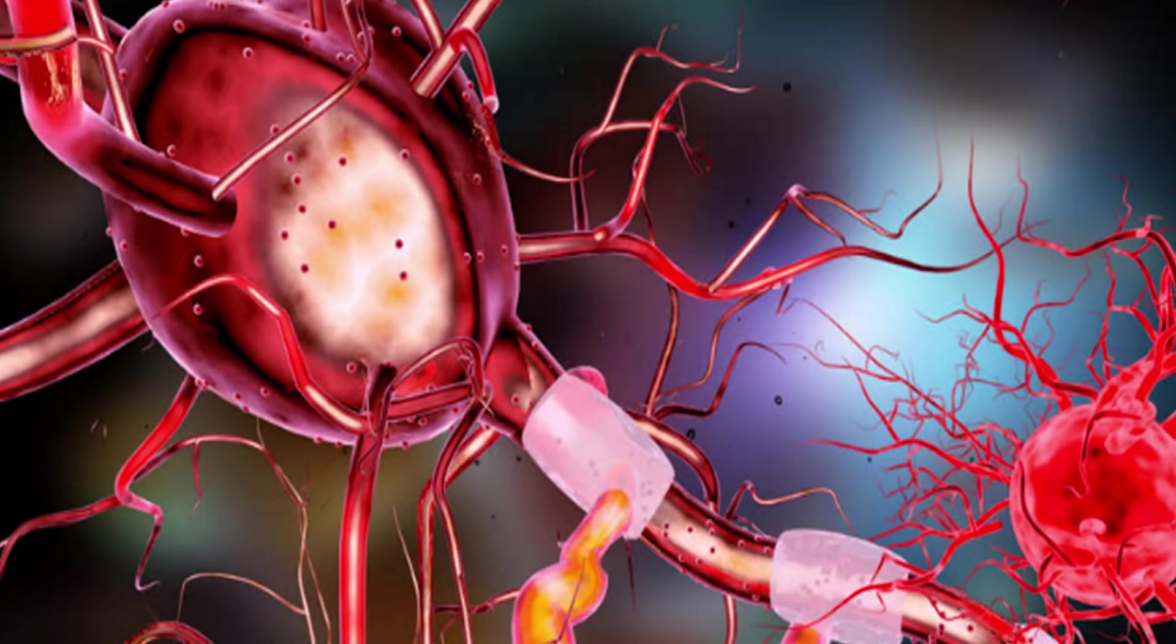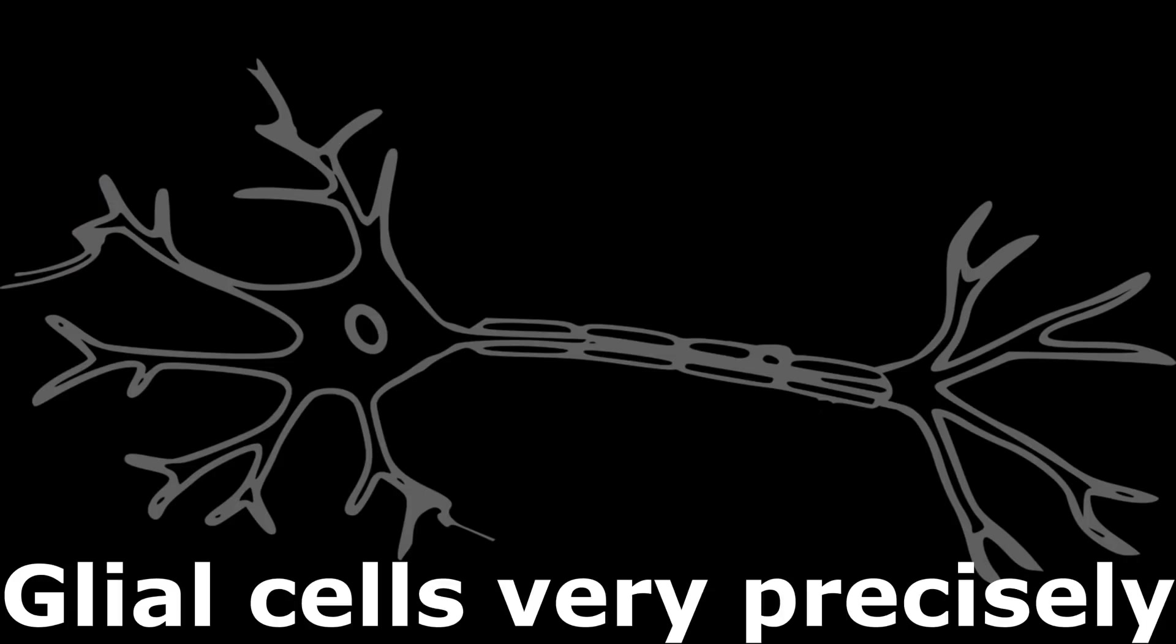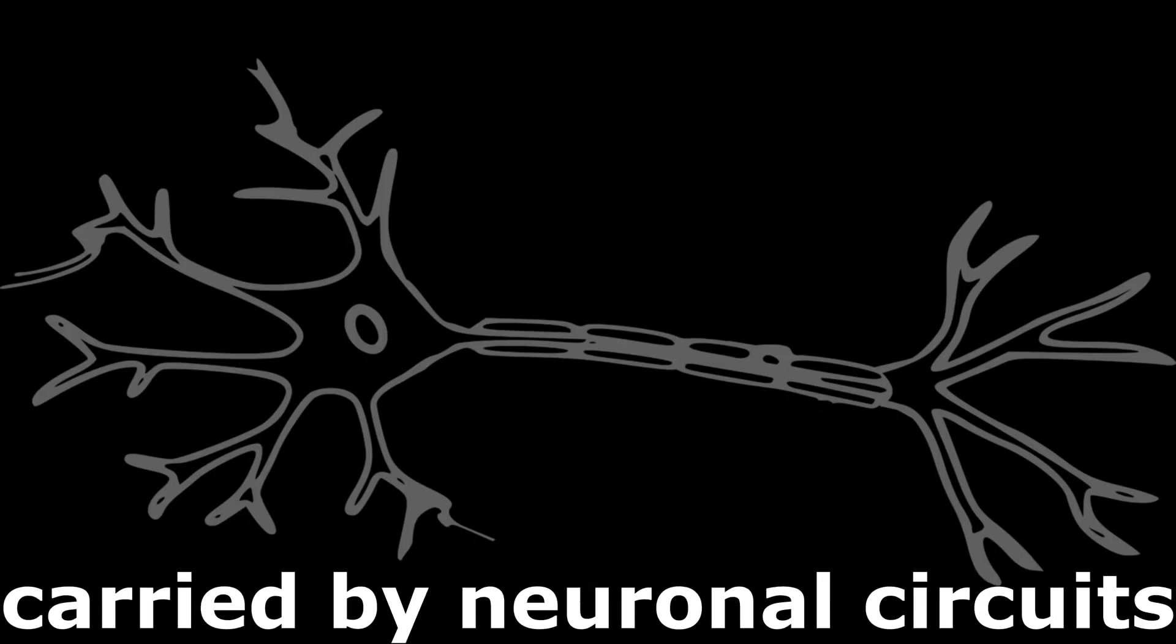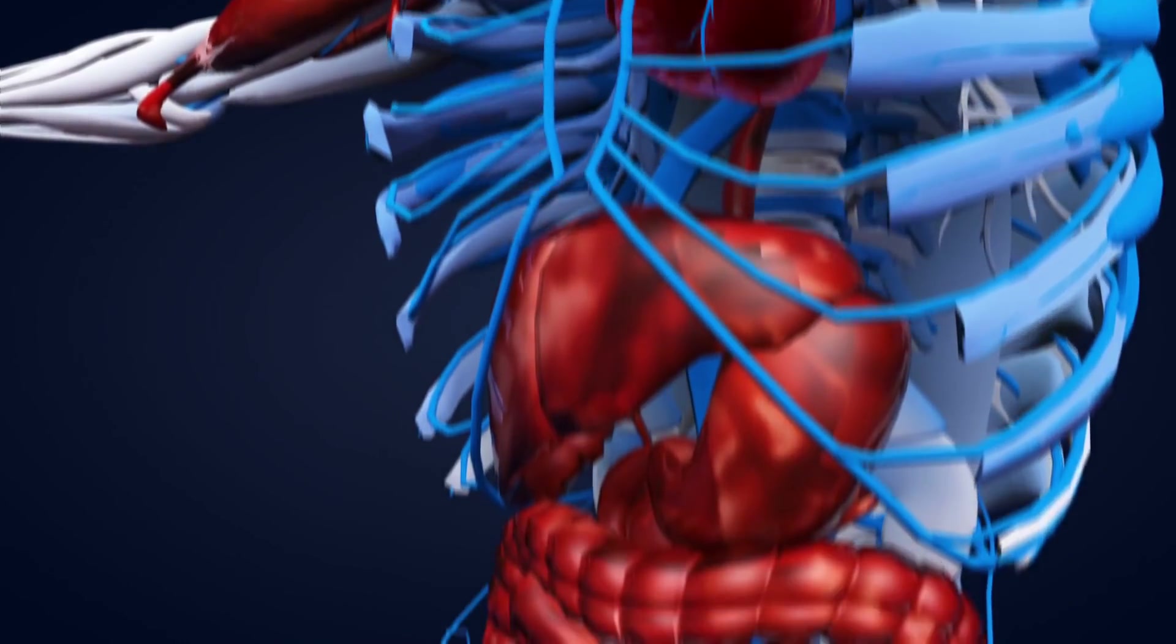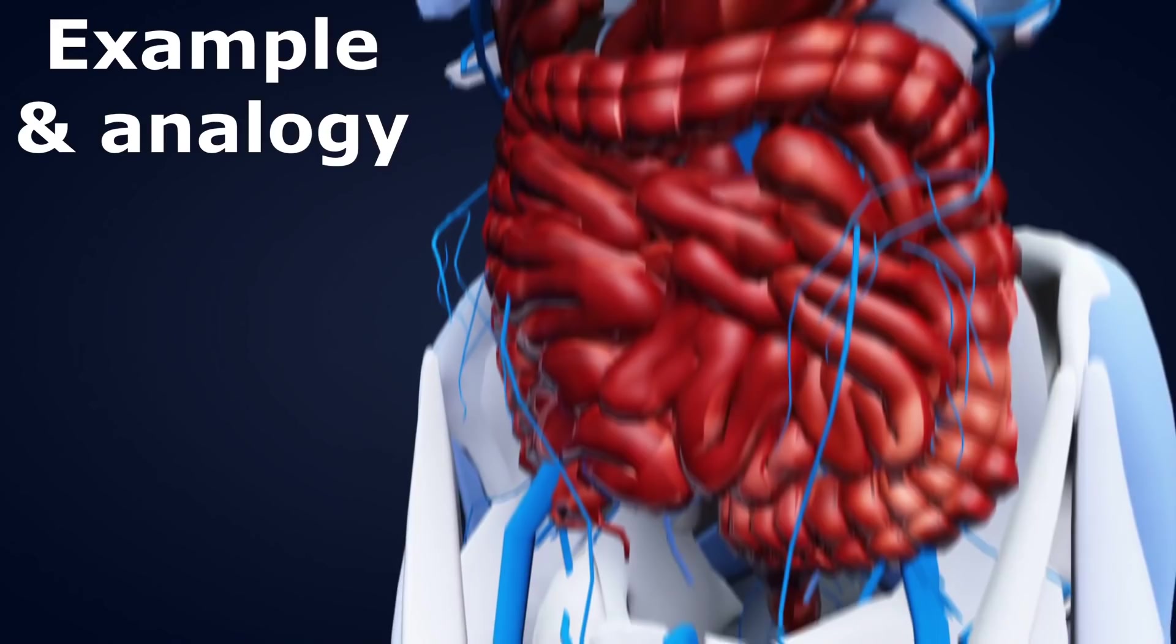According to previous researches, it was thought that glial cells function was just to provide passive support for neurons. But the new research says that glial cells very precisely influence the signals carried by neuronal circuits. To make it more easy, we can understand the functioning of glial cells using simple examples and analogies.